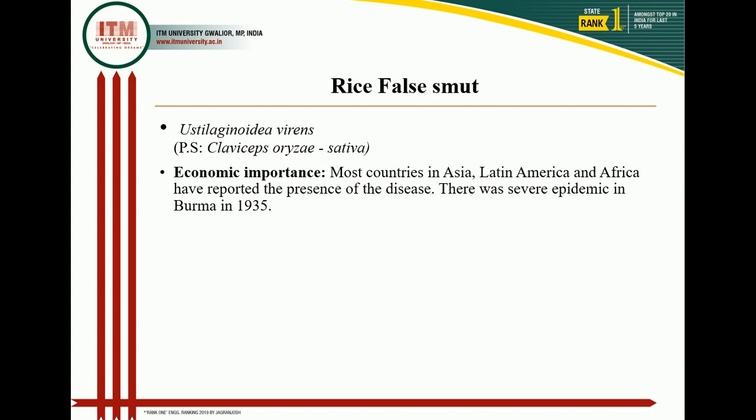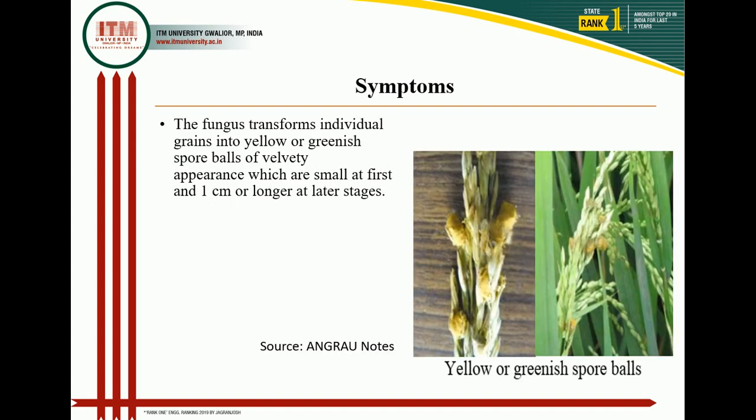Economic importance of rice false smut: most countries in Asia, Latin America, and Africa have reported the presence of this disease. When a severe epidemic occurs, large crop areas are affected by rice false smut. In 1935 in Burma, one epidemic was caused.